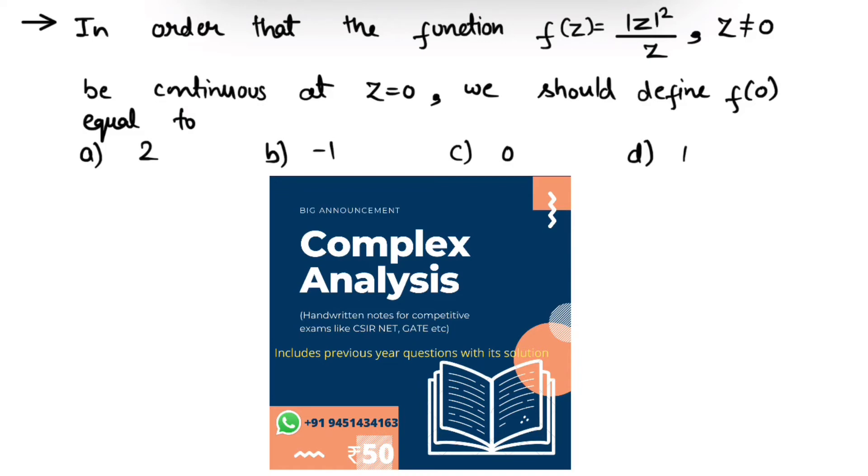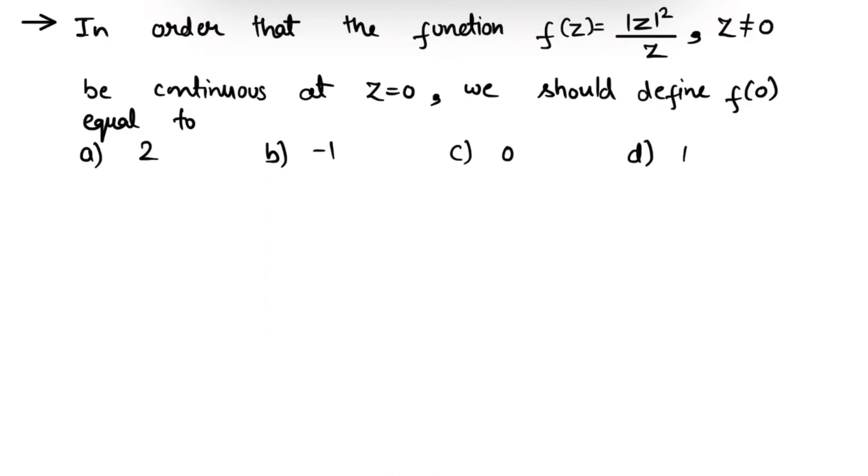So let's solve. Since f(z) has to be continuous at z = 0, that means limit z tending towards 0 f(z) should be equal to f(0).